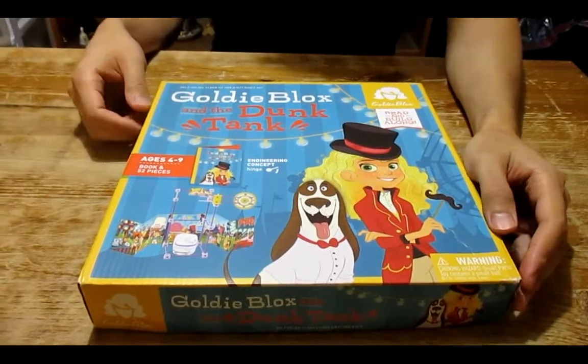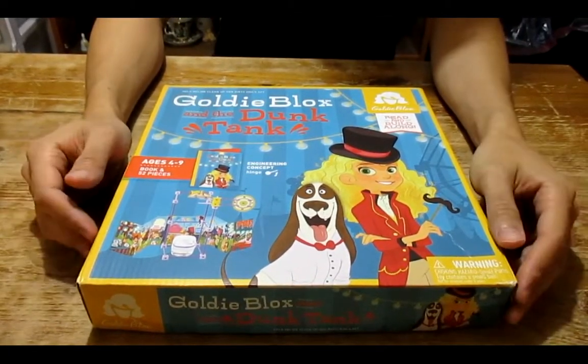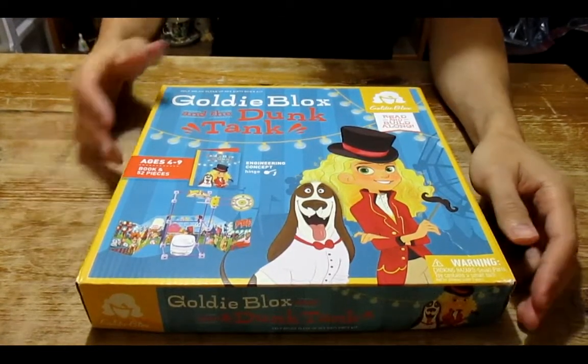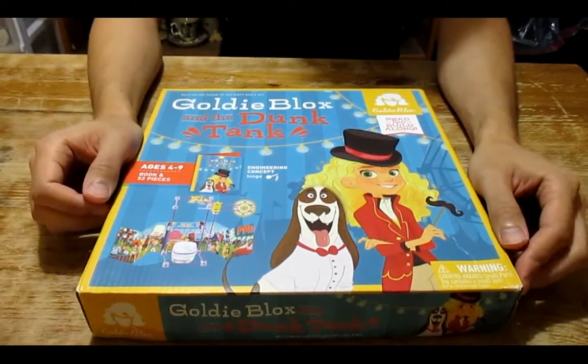Hey everybody, it's me, it's Bob. Today I'm doing something a little bit different. I wanted to show you guys something that we got for our daughter - it's a GoldieBlox and the Dunk Tank set we got for about 20 bucks.